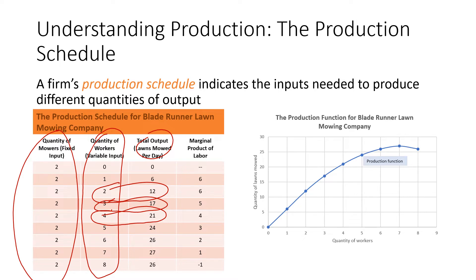The upward slope of the production function continues up to a quantity of seven workers — seven is our peak. This shows that more lawns are mowed with each of the first seven workers hired. When the eighth worker is hired, total output decreases from 27 to 26 lawns — we are now going down. The eighth worker causes output to decrease by achieving nothing except getting in the way. My advice: don't be the eighth worker.